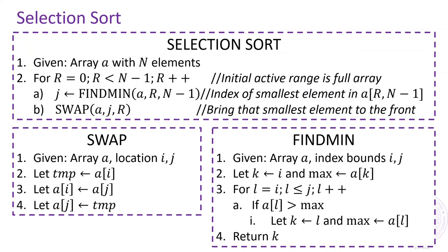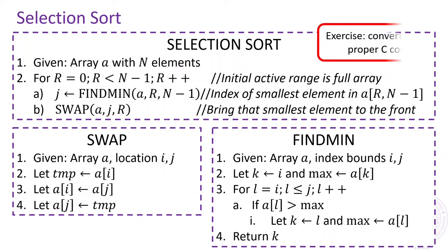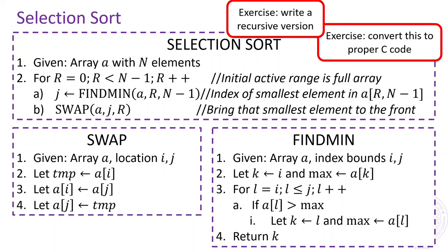Here, we see pseudocode for the selection sort algorithm. Convert it into proper C code and try to use recursion to implement this algorithm instead of using a for loop.